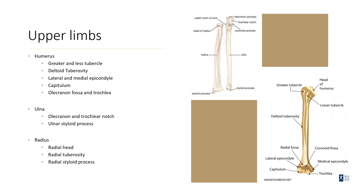Those styloid processes are going to articulate with your carpals. The radius is characterized by a radial head, a radial tuberosity, and a radial styloid process. Just make sure you can distinguish between them: the ulna has a C-shape, the radius has the radial head, and the humerus has a very distinguishable head but also features like the deltoid tuberosity.